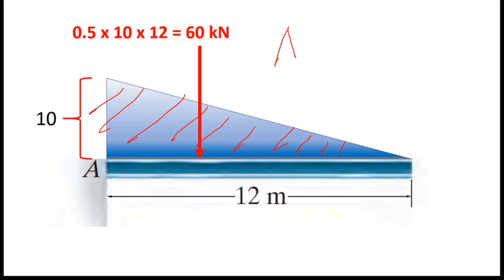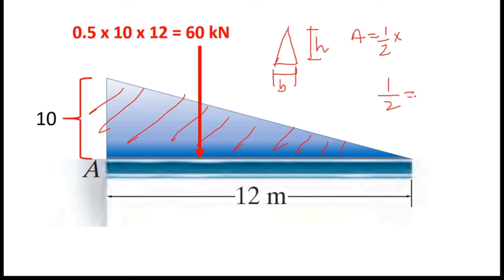For a triangle with base B and height H, the area equals one-half times H times B. Likewise, I can find the area of this triangle: 0.5 times 10 (the height) times 12 (the beam length). Using this relationship I can find the area, which is the resultant force of this triangular part. Then I have to find the acting point of this resultant force.